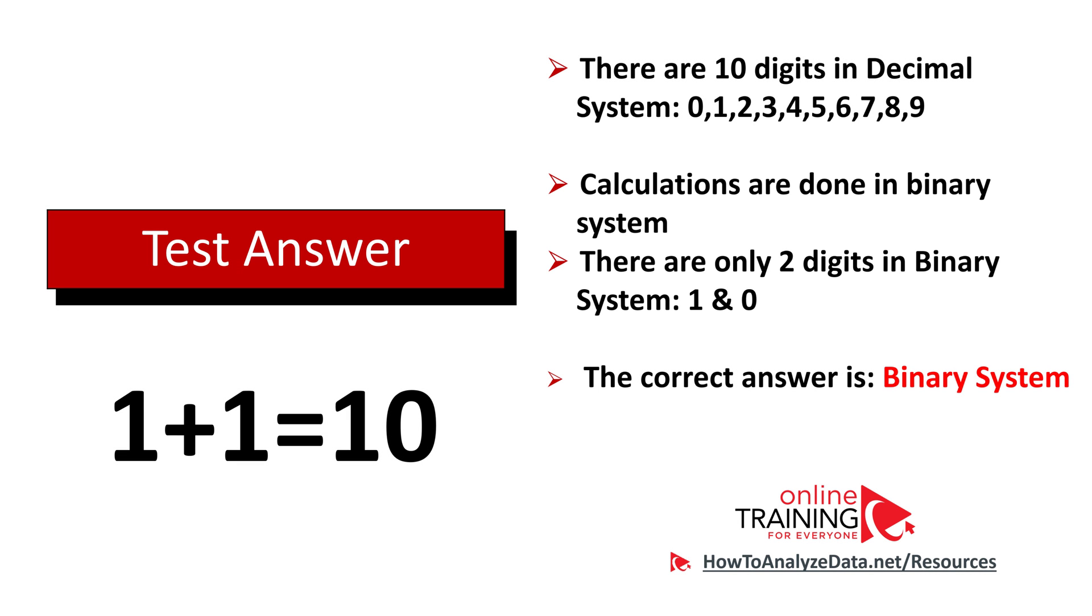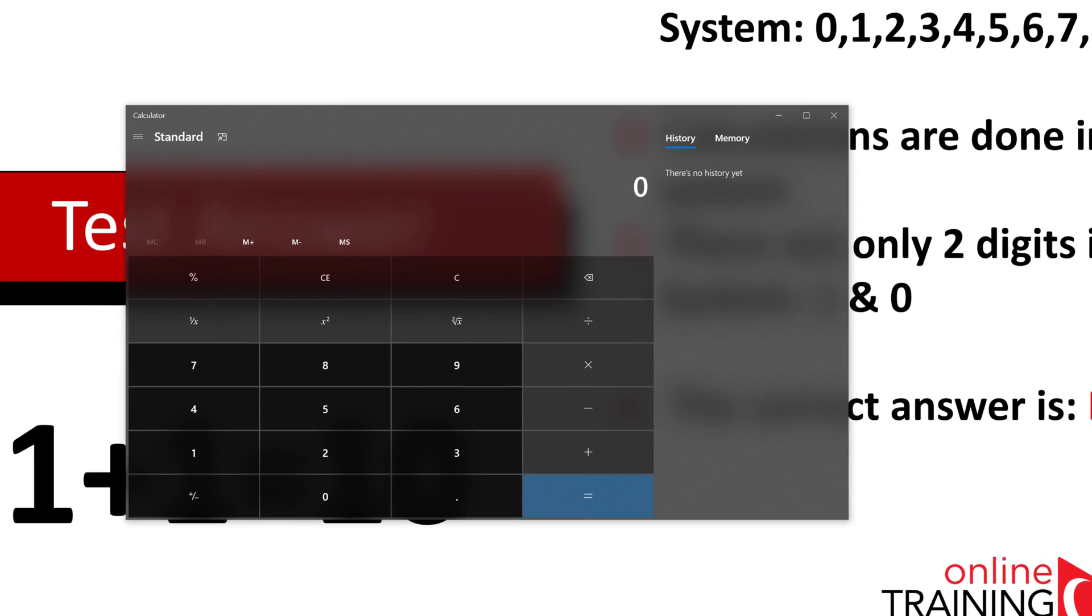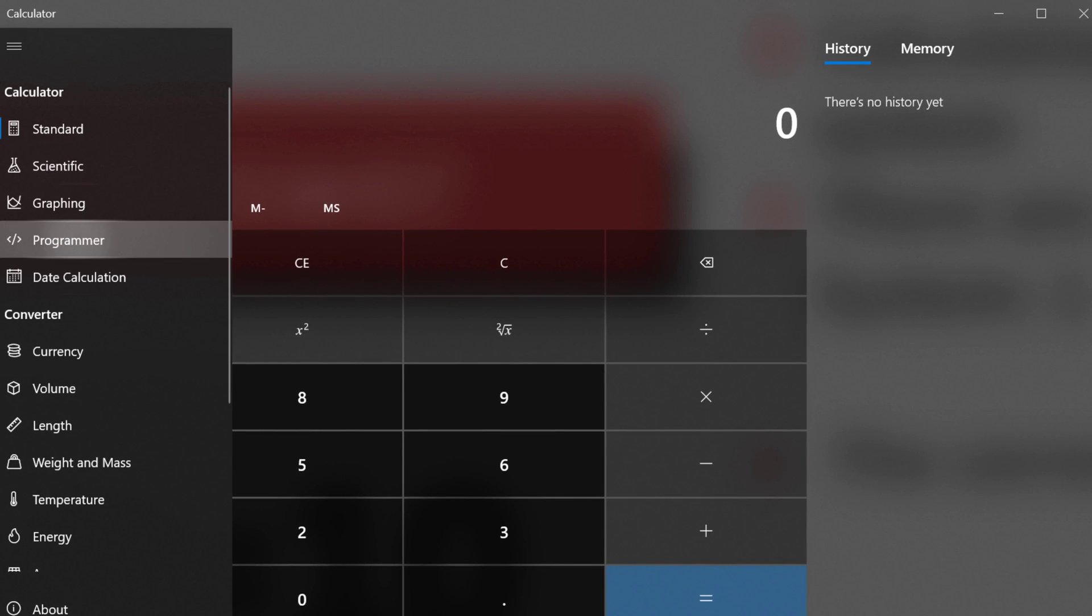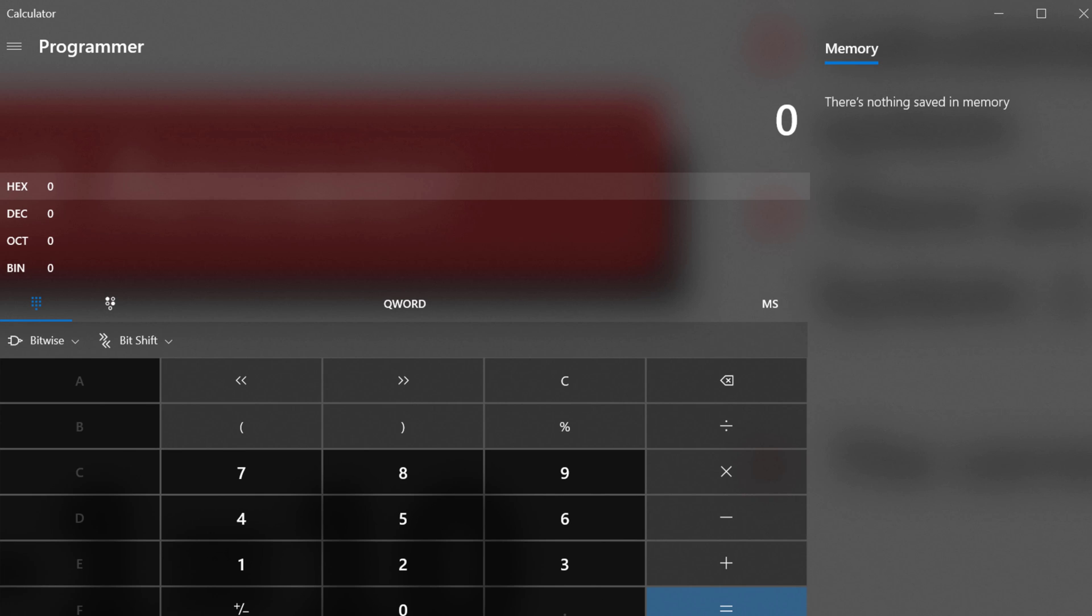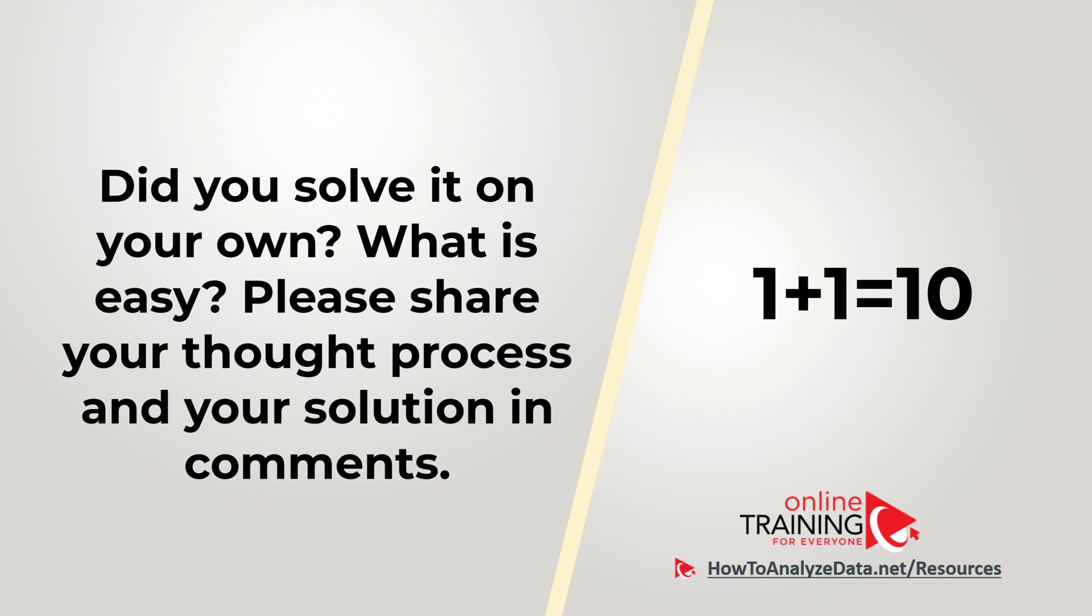Let me demonstrate this to you. If you launch calculator in Windows and then switch to the programmer calculator, you can choose different systems. By default, it's a decimal system. But if we switch to binary, we can add 1 plus 1 equals what looks like 10, in reality is 2 in the binary system. Hopefully you've nailed this question and now know how to answer similar problems on the test.